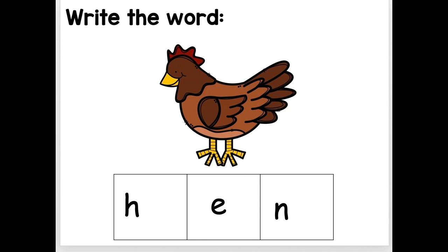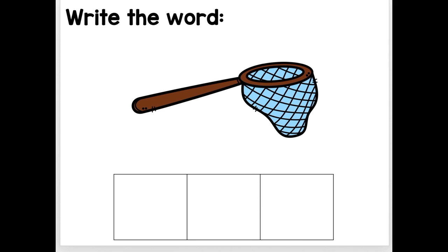Let's try one more together. You can do it. Net. N, -et. What word family do you hear in the word net? That's right, the -et family. What's that beginning sound? You can do it. Let's find out if you got it right.